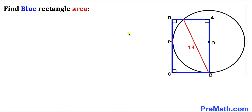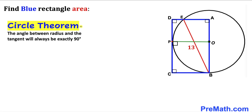Let's get started. We'll label the side lengths, then connect center O with the point of tangency P. Recalling the circle theorem: the angle between a radius and a tangent is always 90 degrees. So this angle is 90 degrees, since CD is our tangent line and OP is the radius of the circle.